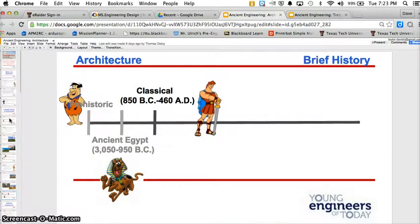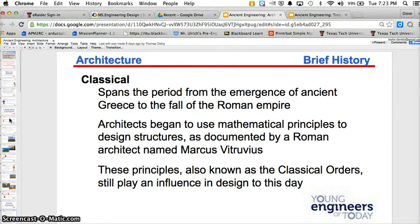And then, which leads us to classical. Classical spans the period from the emergence of ancient Greece to the fall of the Roman Empire. Architects began to use mathematical principles to design structures. As documented by Roman architects, these principles, also known as classical, still play an influence in design to this day.